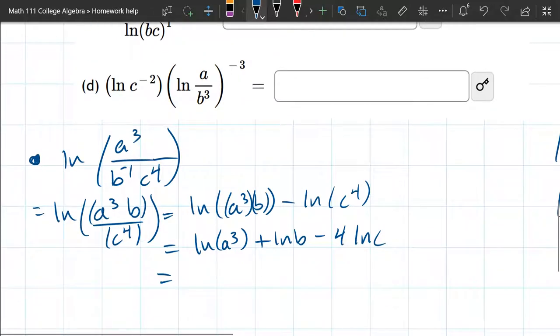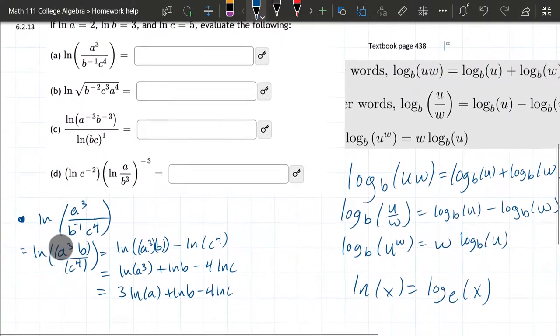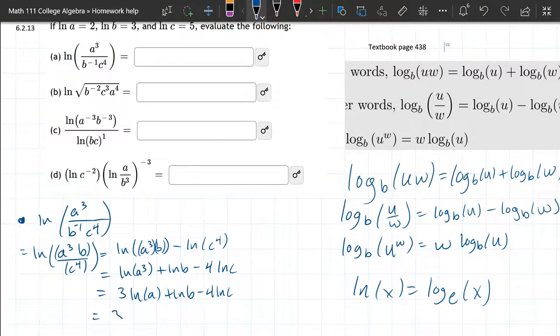The last thing we're going to do, the exact same move, but to the 1st log. That exponent comes out as a coefficient. From here, we already have all these values. They're at the very top. ln A is 2. So you have 3 times 2. ln B is 3. ln C is 5. So it's 4 times 5. And that number is the simplified version of this original natural log.